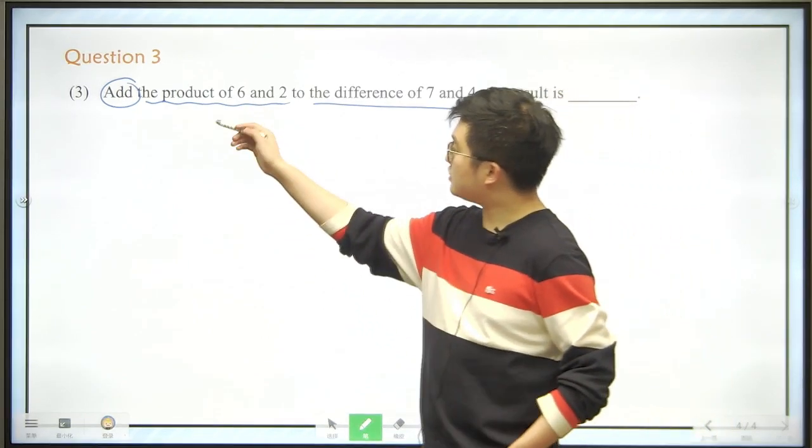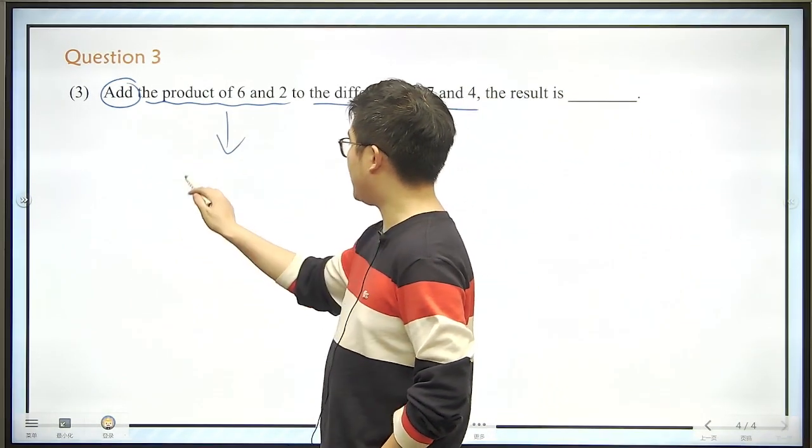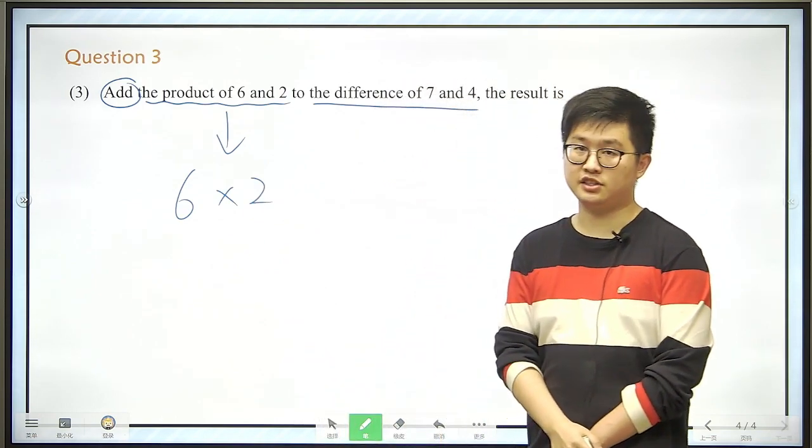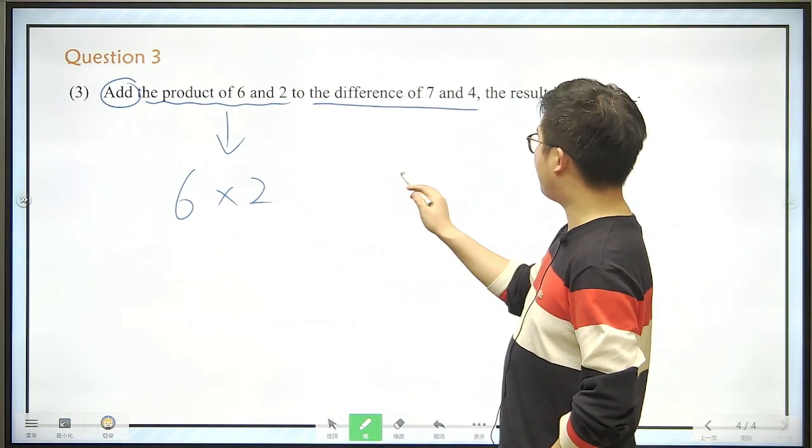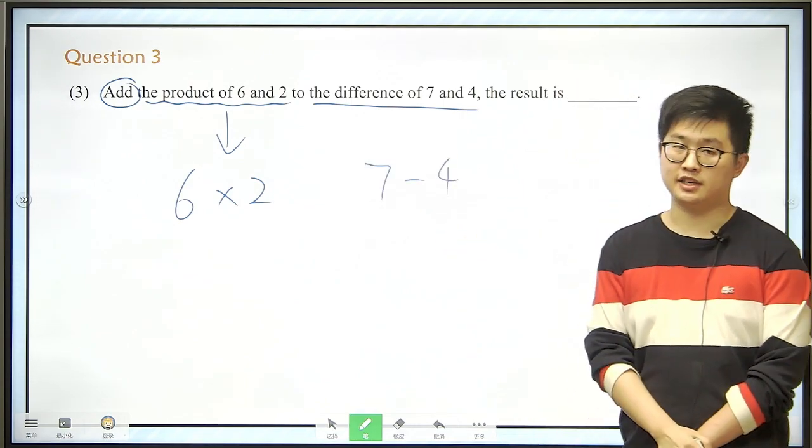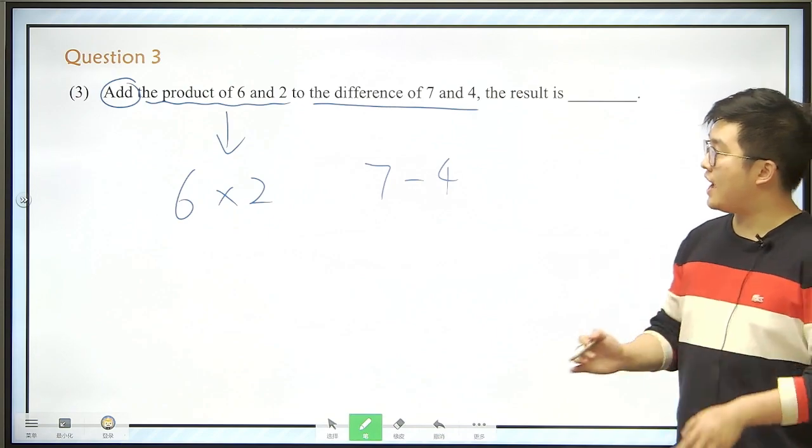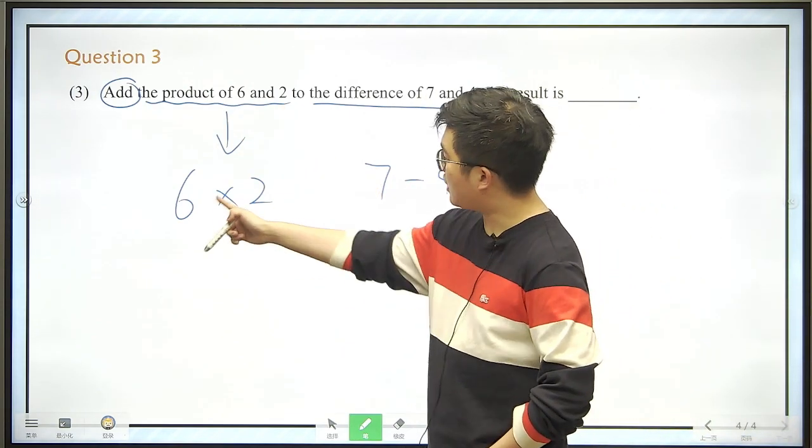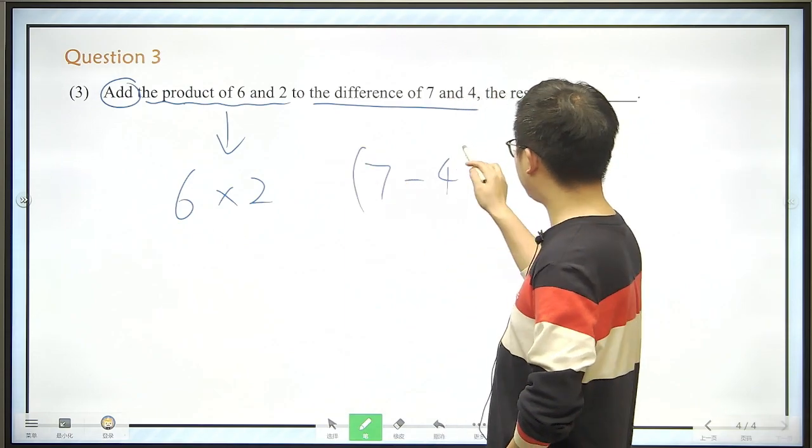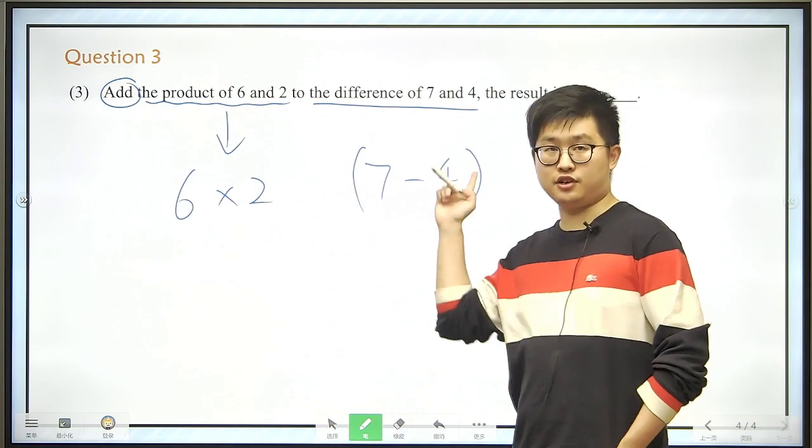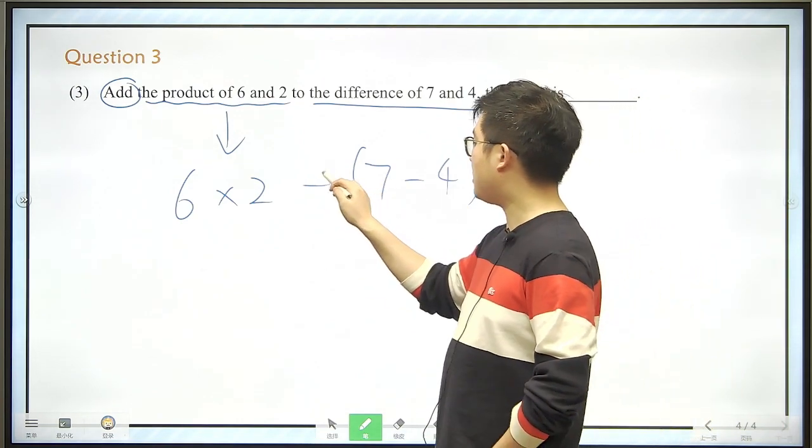So the product of 6 and 2, that is 6 times 2, right? And the difference of 7 and 4, that is 7 minus 4. And we need to add the product and the difference. So product is this, but difference here, we need brackets again, because we should calculate this first.